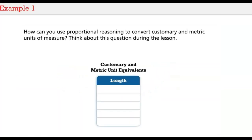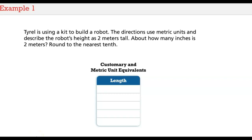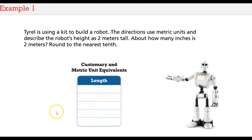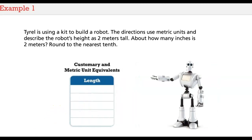How can you use proportional reasoning to convert customary and metric units of measure? Tyrell is using a kit to build a robot. The directions use metric units and describe the robot's height as 2 meters tall. About how many inches is 2 meters? Round to the nearest tenth.